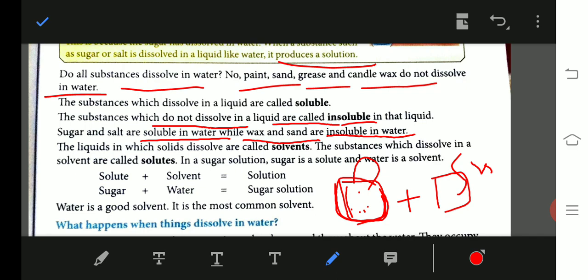Solute and solvent will become more clear from the example you can see. What is solute? The solid substance we put in the liquid, the thing we want to dissolve in the liquid, that is called solute. And solvent is the liquid in which we are dissolving. For example, if we take milk and add sugar in the milk, then sugar is the solute and milk is the solvent.